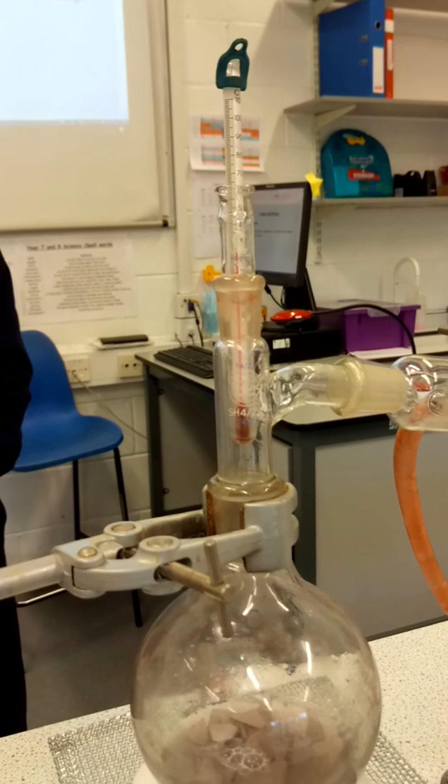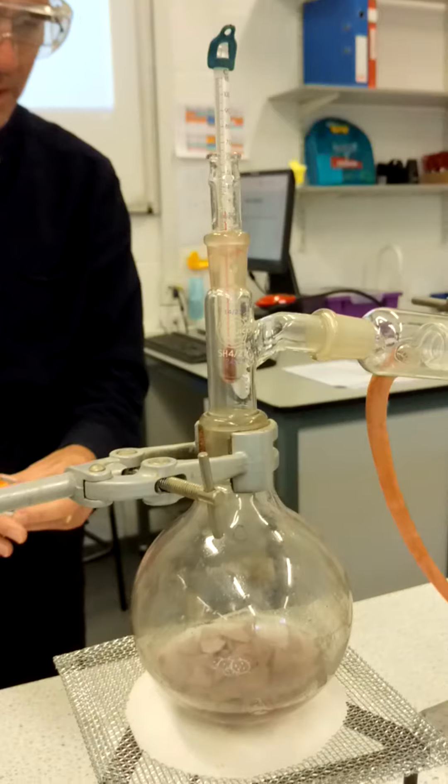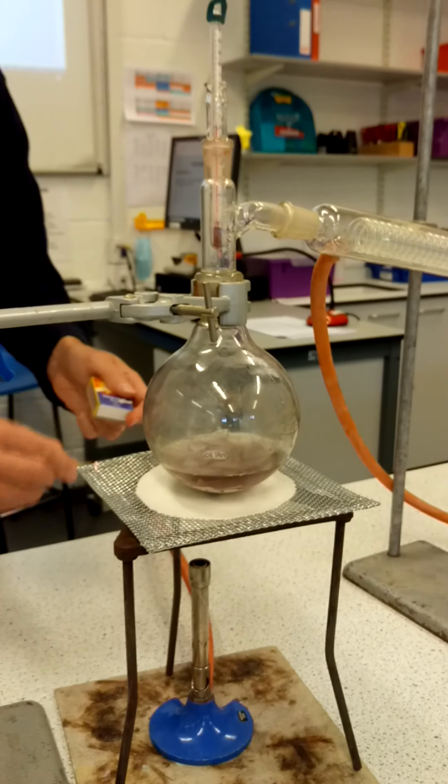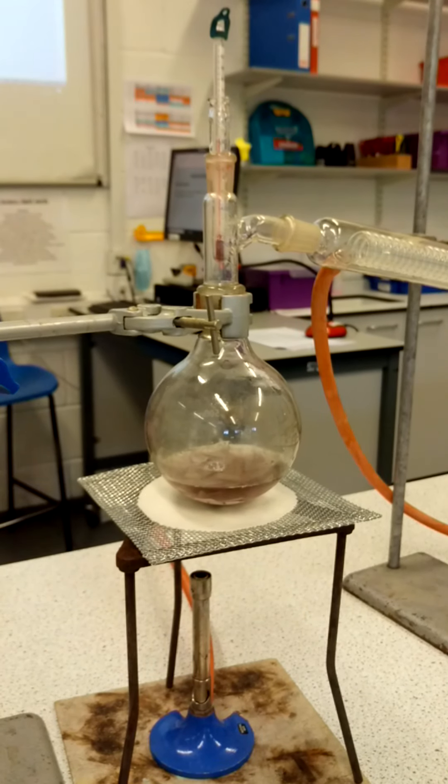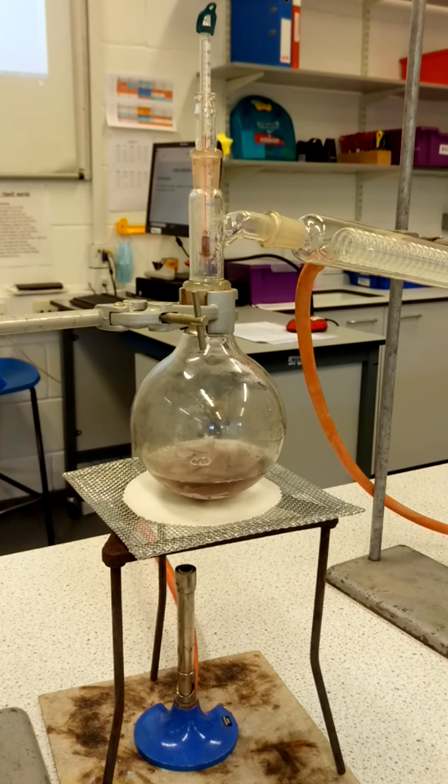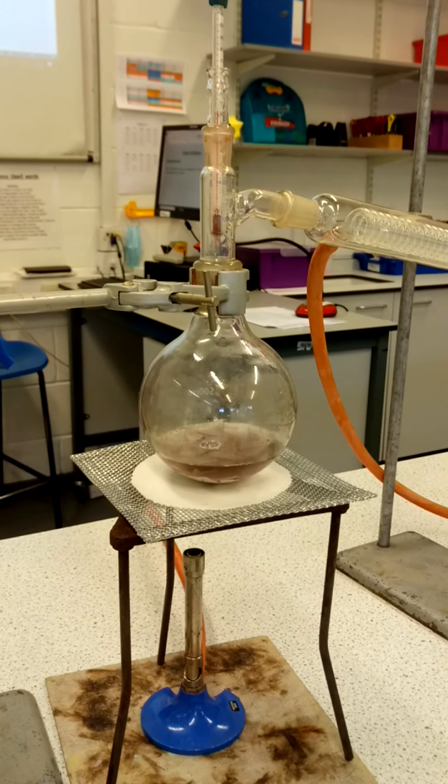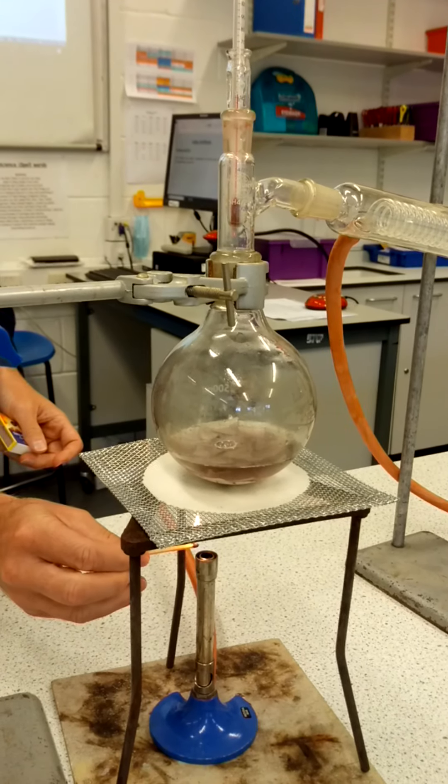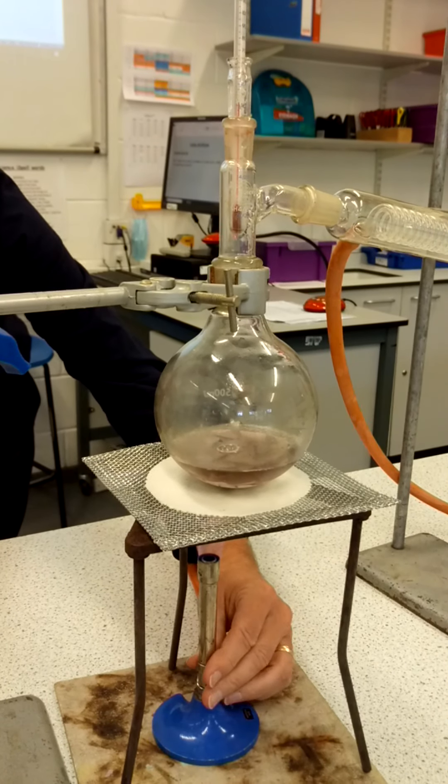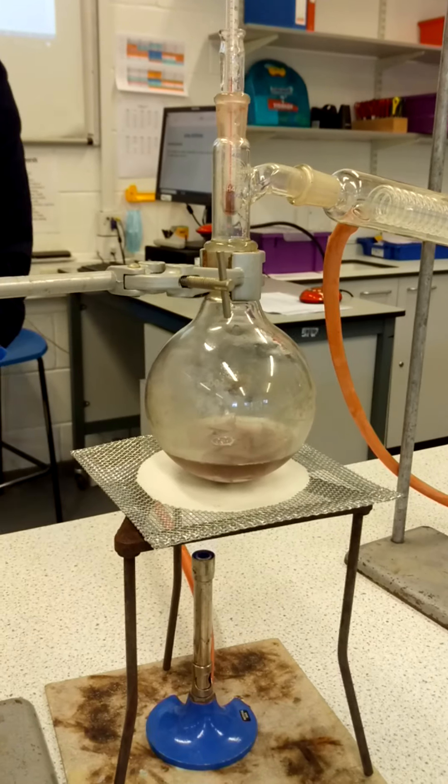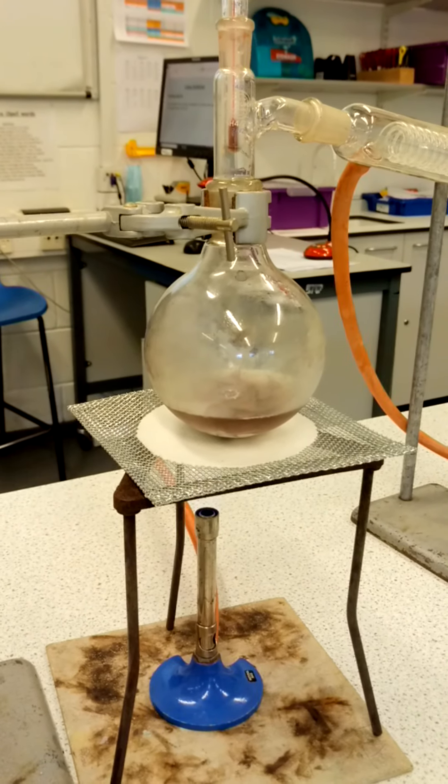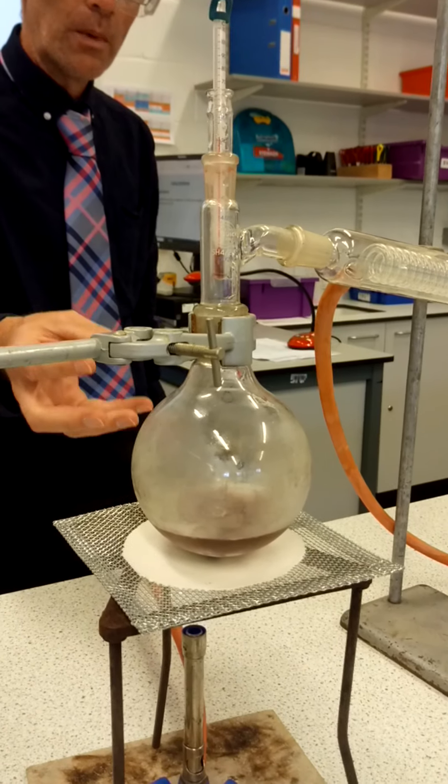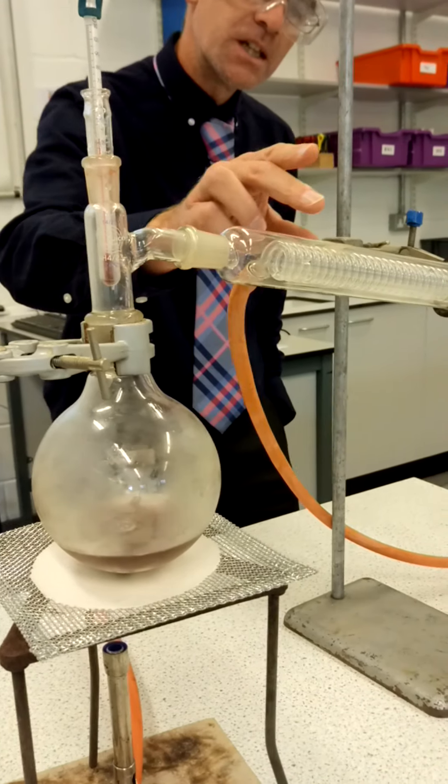And I'm going to ignite the Bunsen and get that going because it will take a couple of minutes. And so what's going to start to happen here in the flask is that the mixture is going to warm up. Now, this is the Liebig condenser.